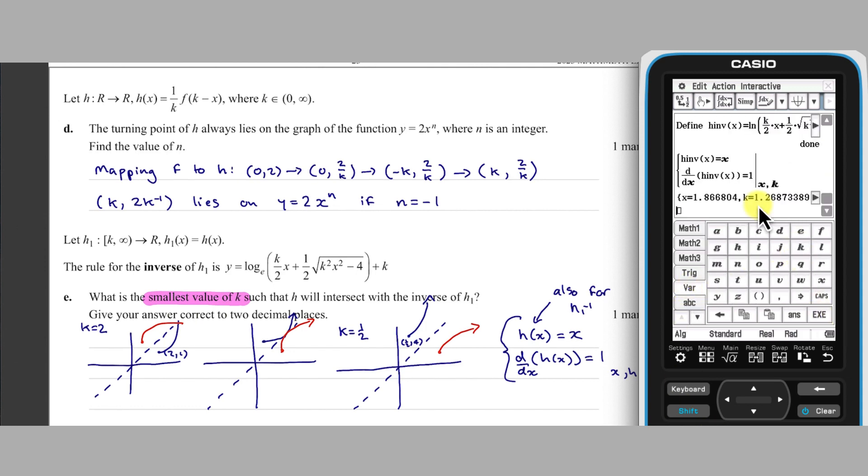This might take a few seconds on a handheld, but the answer K equals 1.27 to two decimal places should be obtained.